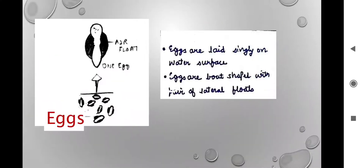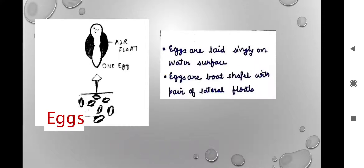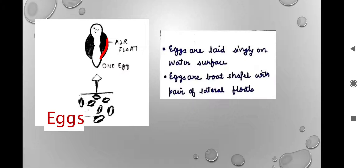Talking of the eggs first. When we talk of eggs of Anopheles mosquito especially, eggs are laid singly on the water surface — all mosquito eggs are aquatic. They are boat-shaped — you can see the shape here — and they have a pair of lateral floats. That is the way you identify them.